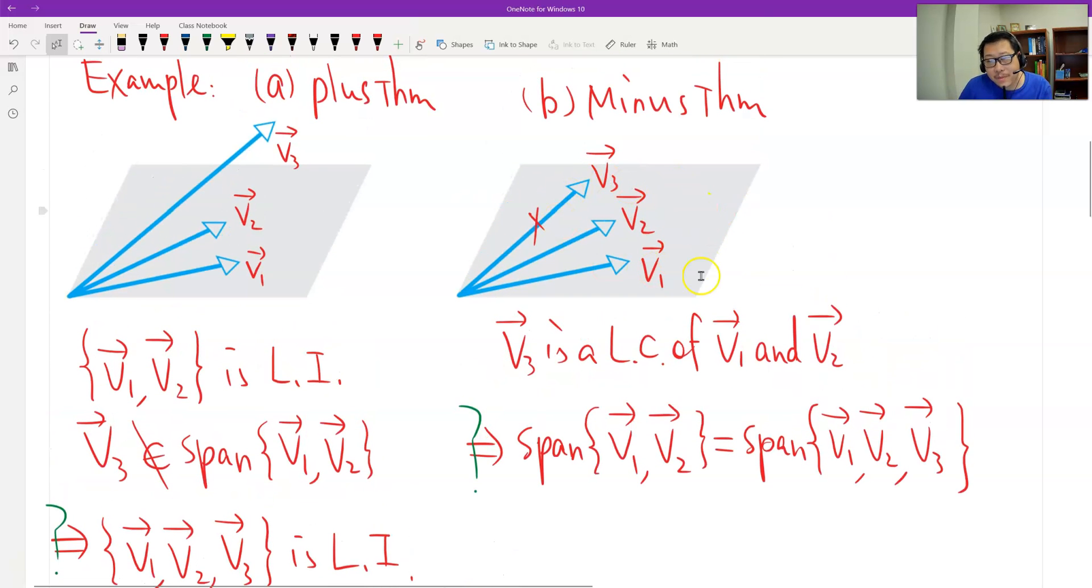Now look at the second, the minus. A little bit different. Can you see? Here's the minus theorem, an example of the minus theorem. Alright. V1, V2 span a plane. And if V3 belongs to the span, or we say V3 is a linear combination of V1 and V2, therefore, after we minus V3, the spans are the same.